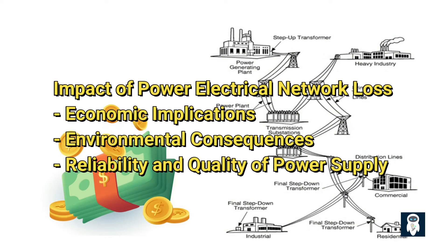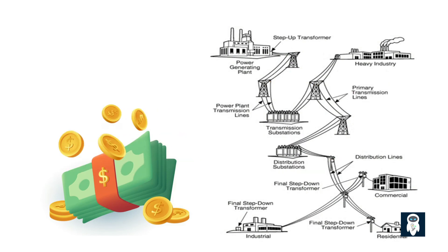Reliability and quality of power supply: Power electrical network loss affects the reliability and quality of power supply. Higher losses can lead to voltage fluctuations, reduced voltage stability, and power outages. By minimizing network losses, power supply becomes more stable and consistent, ensuring uninterrupted electricity for consumers. Power electrical network loss is a significant issue that affects the power sector and society. By understanding the causes, types, and ways to reduce it, we can make better decisions and actions to improve the power system and the environment.